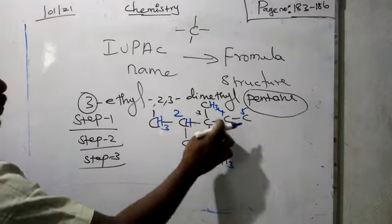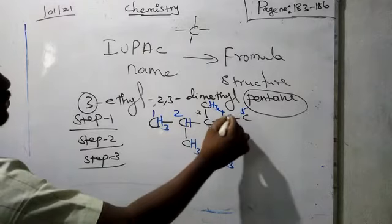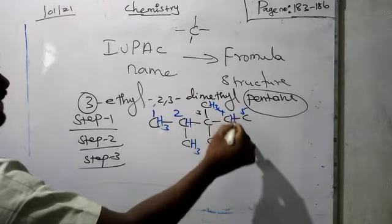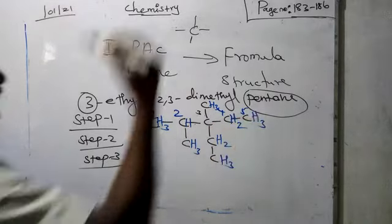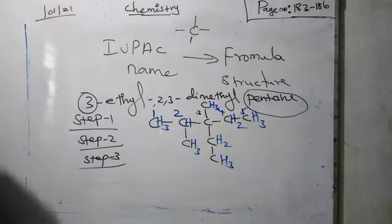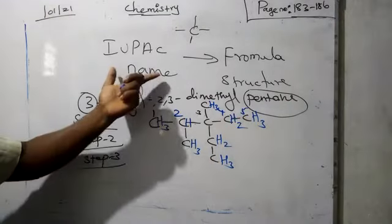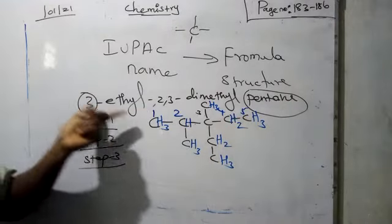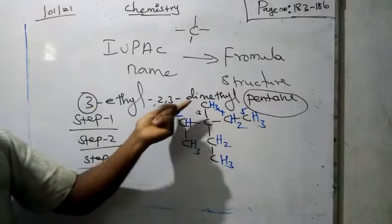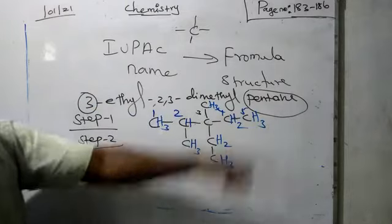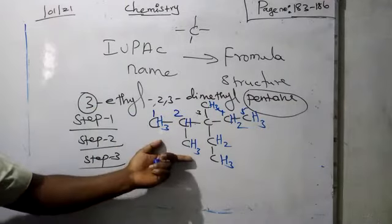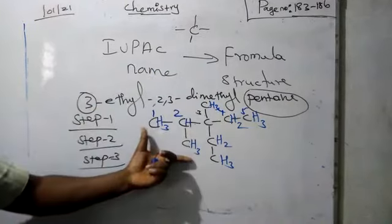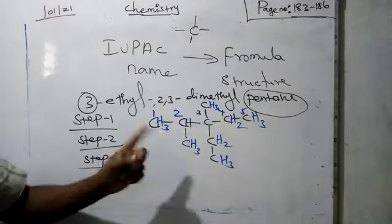Terminal carbons take 3 hydrogen atoms. So from the IUPAC name 3-ethyl-2,3-dimethyl-pentane, we have derived the structural formula for that compound.